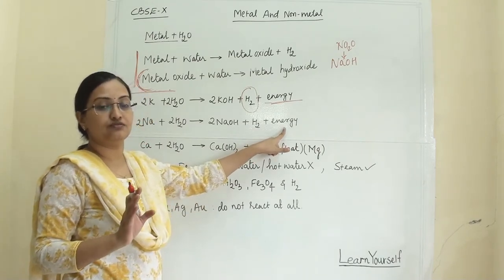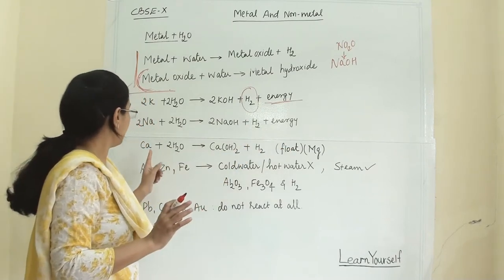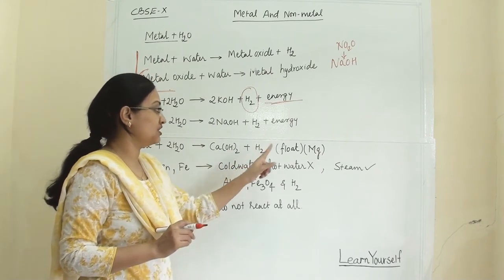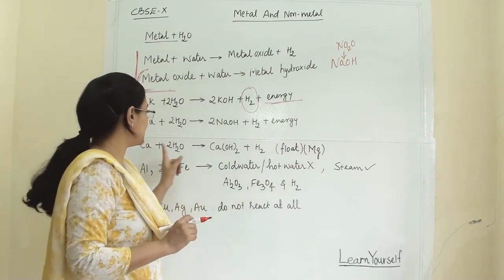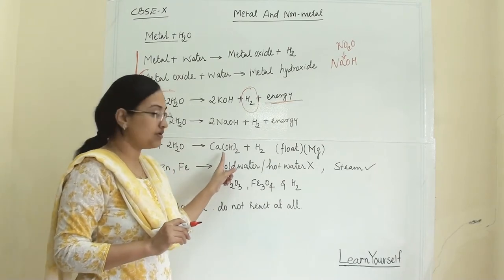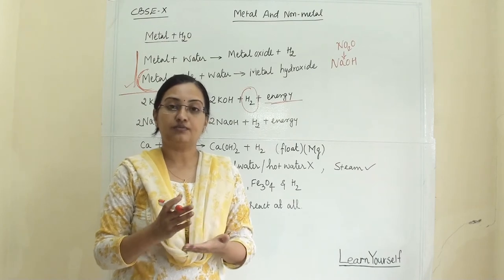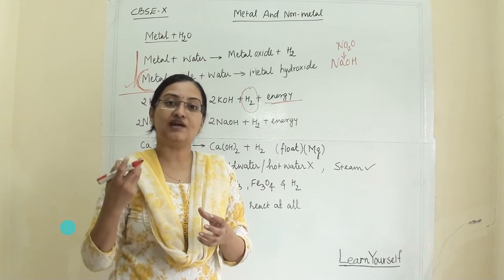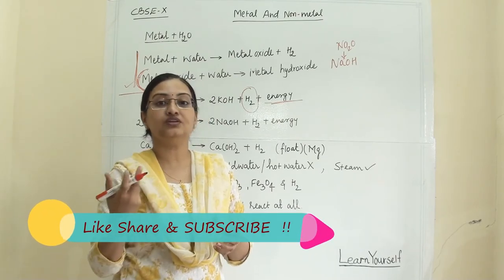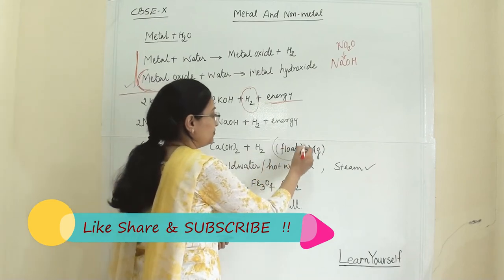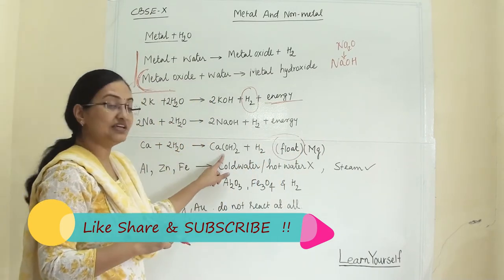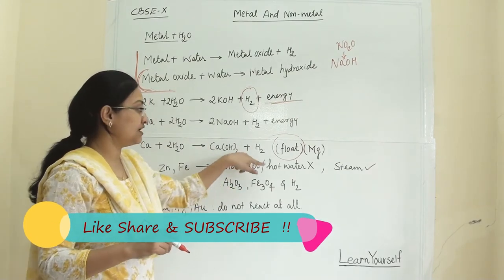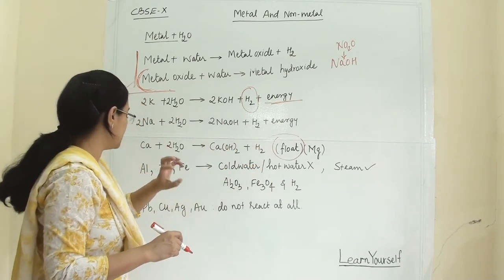Sodium also reacts so violently and vigorously with water that it catches fire and the hydrogen gets burned. A lot of heat energy is produced. When calcium reacts with water we get calcium hydroxide and hydrogen gas. Magnesium similarly reacts with water to give magnesium hydroxide and hydrogen. In the case of calcium and magnesium, hydrogen gas bubbles stick to the metal surface, causing the metal to start floating on the liquid.